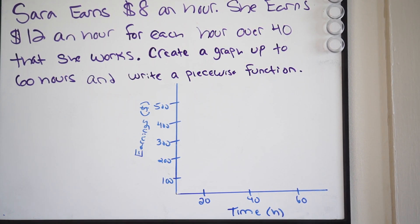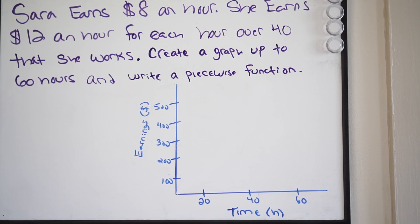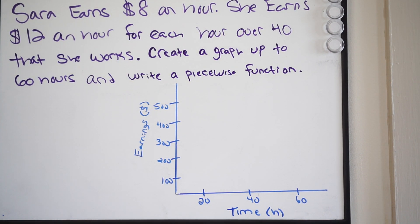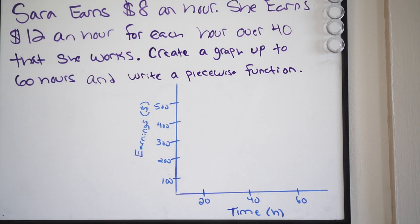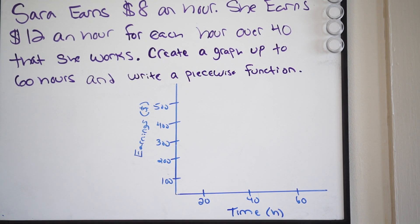All right, guys, here is our next example, and we are dealing with piecewise functions here. So very similar to the last problem that we just did. What we're going to do is set this up. They want us to graph it and then create a piecewise function with the rules. We're going to pick out that information from this word problem, so let's read it.